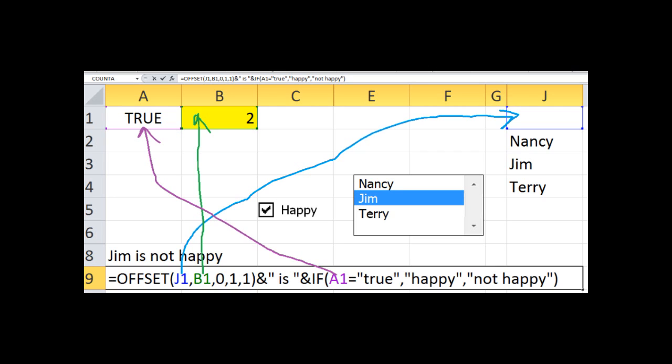Because remember, if a checkbox is checked in cell A1, it will automatically have the statement TRUE. If it's unchecked, it will be FALSE. So that's why the formula says, if cell A1 equals TRUE, then HAPPY. If it doesn't say TRUE, then it will be NOT HAPPY. So let's say if we didn't check that box and we selected the name TERRY, the statement would read TERRY IS NOT HAPPY. Now let's say we checked the box and we selected NANCY from the list box. It would read NANCY IS HAPPY.